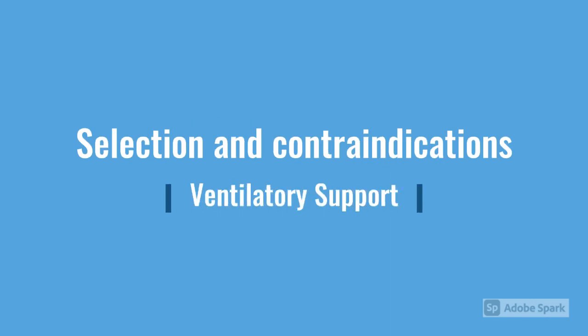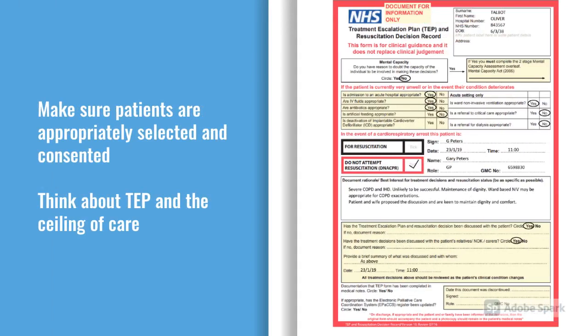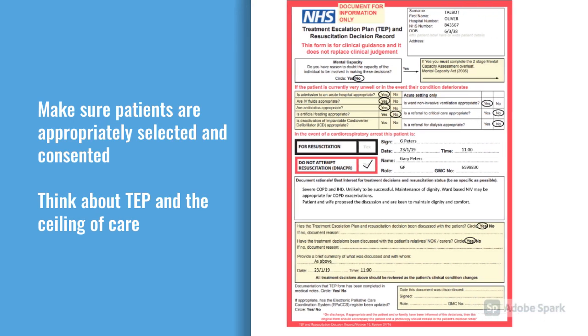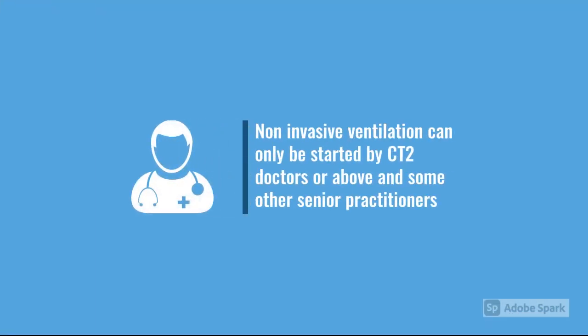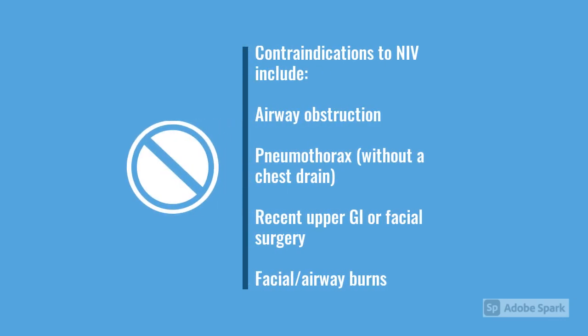Before we start ventilatory support, what do we need to consider? It's very important that we make sure our patients are appropriately selected and consented. We need to think about where we're going — so it's really important to discuss with the team and the patient about their treatment escalation plan and ceiling of care. Ventilatory support can only be started by CT3 doctors or above, or other senior members of the team such as senior respiratory nurses, ITU staff, or senior respiratory physios. Contraindications include airway obstruction, pneumothorax without a chest drain, recent upper GI bleed, GI surgery, or facial surgery, as well as facial or airway fractures.